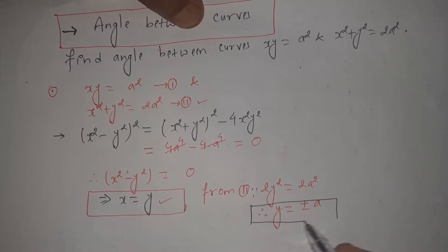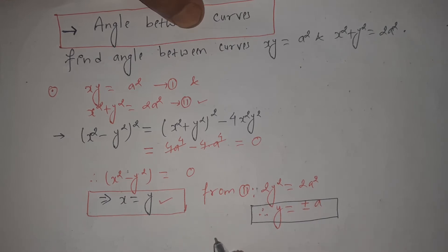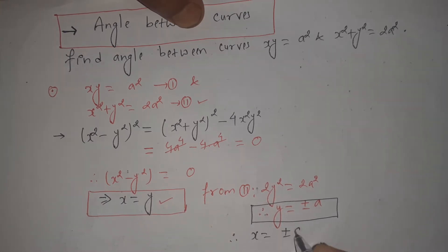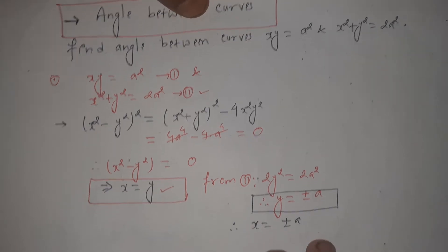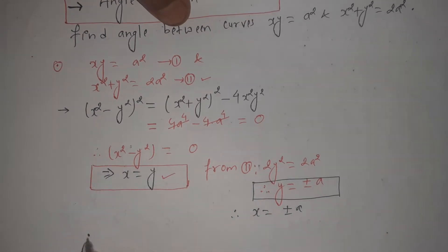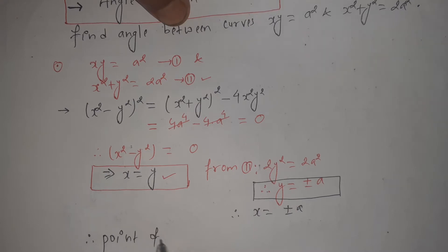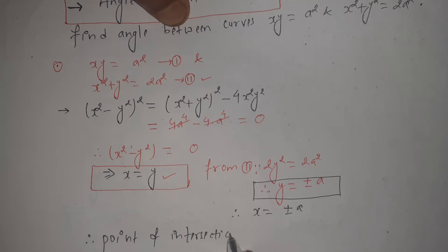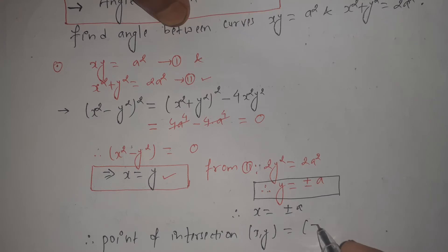Therefore, the point of intersection of the two given curves is (x, y) = (±a, ±a). This is the point of intersection between the two given curves.